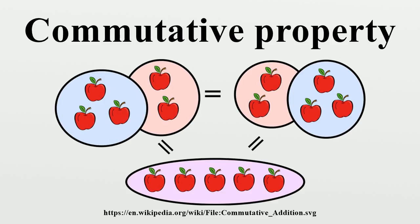History and etymology: Records of the implicit use of the commutative property go back to ancient times. The Egyptians used the commutative property of multiplication to simplify computing products. Euclid is known to have assumed the commutative property of multiplication in his book Elements. Formal uses of the commutative property arose in the late 18th and early 19th centuries. The first recorded use of the term commutative was in a memoir by François Servois in 1814. The word combines the French word commuter, meaning to substitute or switch, with the suffix -ative, meaning tending to — so the word literally means tending to substitute or switch. The term then appeared in English in Philosophical Transactions of the Royal Society in 1844.